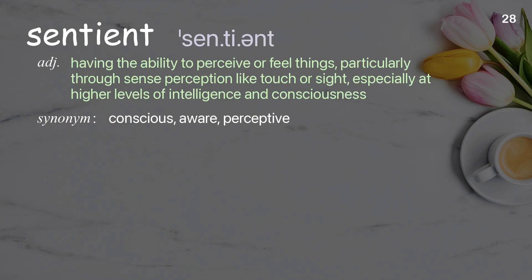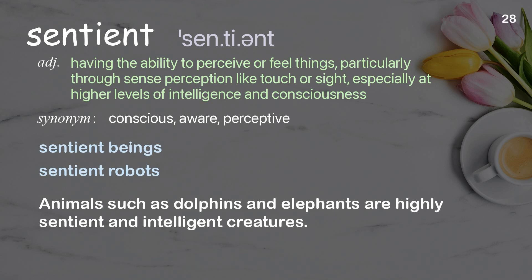Sentient: having the ability to perceive or feel things, particularly through sense perception like touch or sight, especially at higher levels of intelligence and consciousness. Examples: sentient beings; sentient robots. Animals such as dolphins and elephants are highly sentient and intelligent creatures.